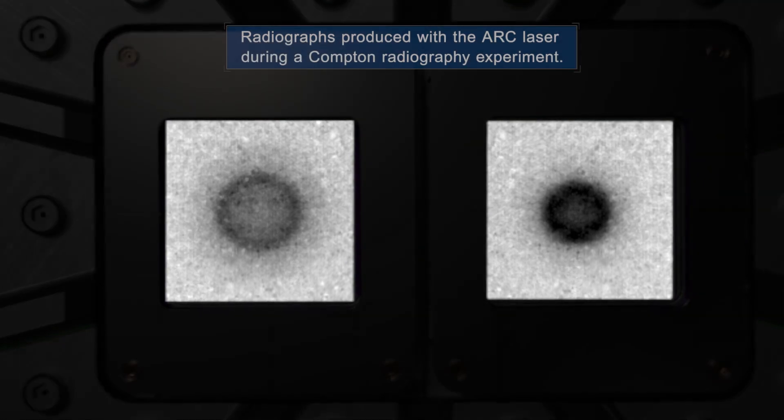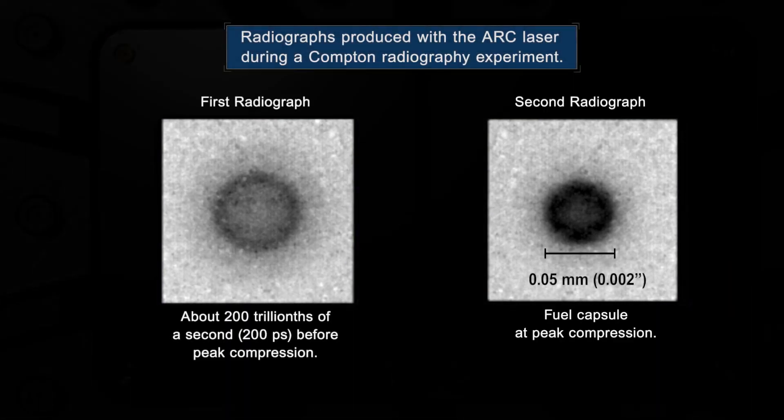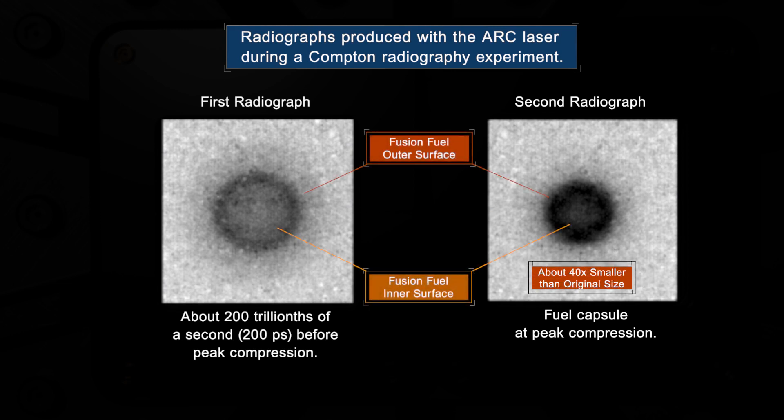Similar to doctors' X-rays, these two radiographs allow scientists to see the inside of the incredibly dense capsule before it undergoes nuclear fusion, which is the same process that generates light and energy from the interiors of stars. Immediately afterward, the energy from nuclear fusion blows apart the capsule.